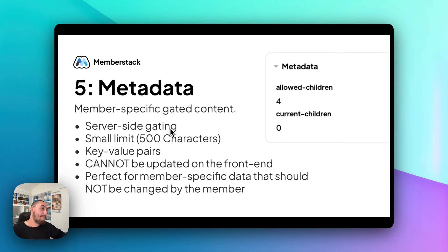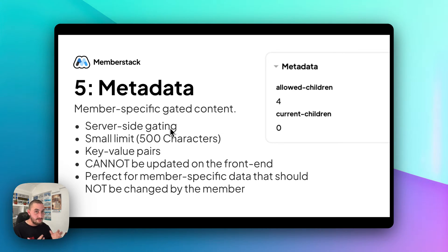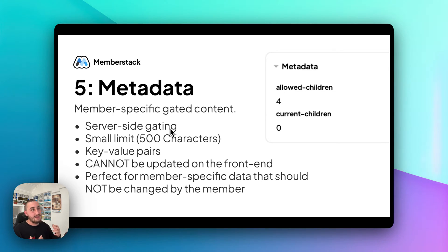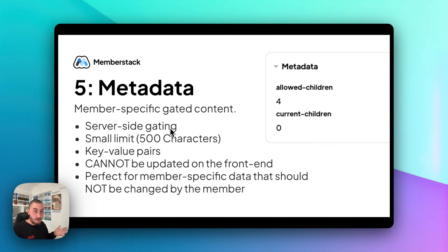What might be for you is the next method, which is metadata. Metadata, again, is server-side — this cannot be accessed by anyone except for that specific member. Metadata does have a smaller limit of 500 characters per member, so you're not going to want to keep a whole bunch of super complex stuff in there. The format is key-value pairs. As you can see in this example, this member has 'allowed children: 4, current children: 2' — and this is a great example from when we were making a team accounts prototype using MemberStack, something that we don't want the user to be able to automatically update on their own.